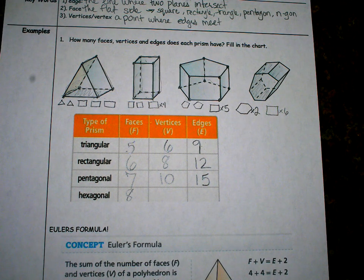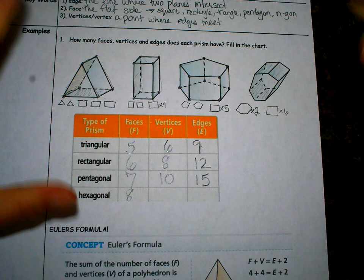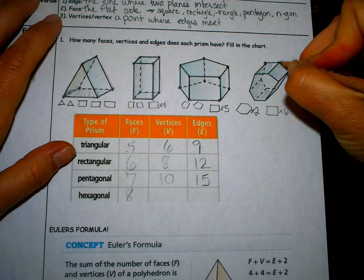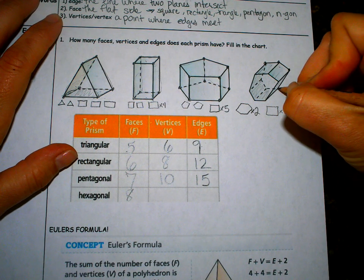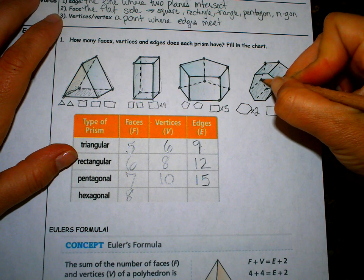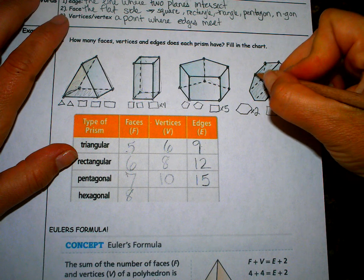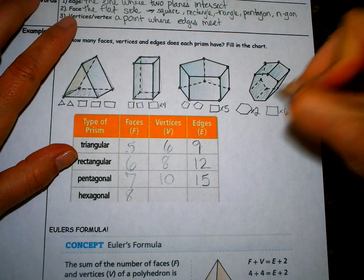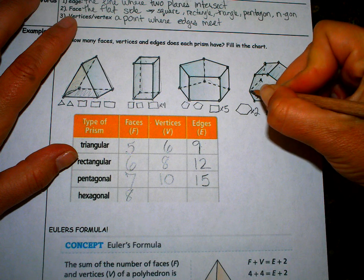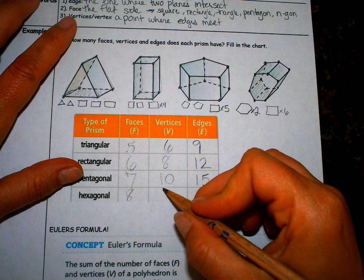Next to my vertex, vertices. My vertices, corners, little points. One, two, three, four, five, six, seven, eight, nine, 10, 11, 12. So that's 12.